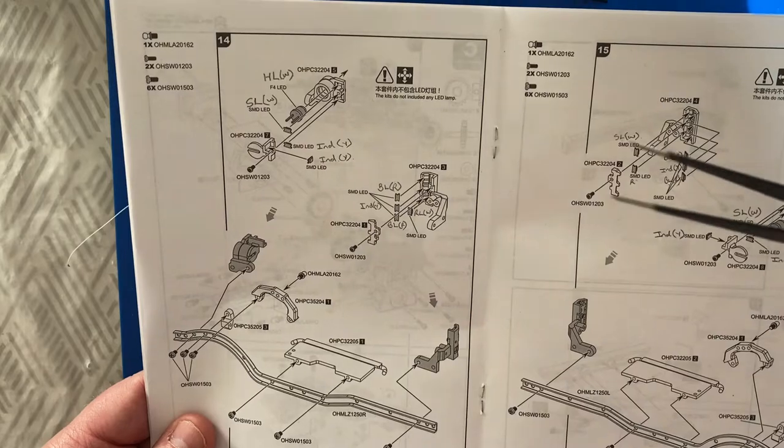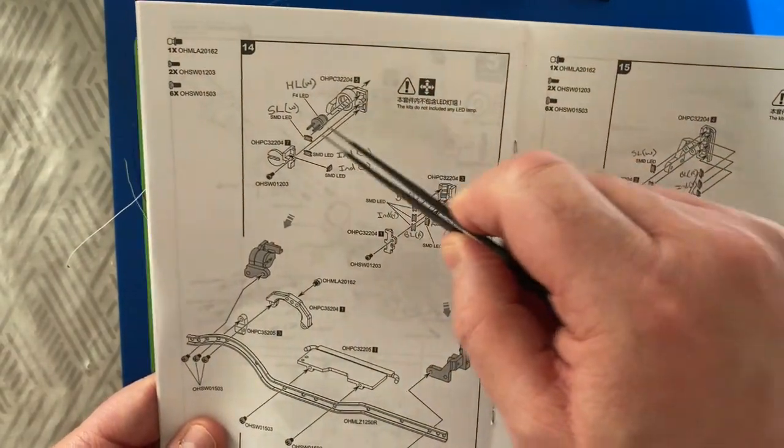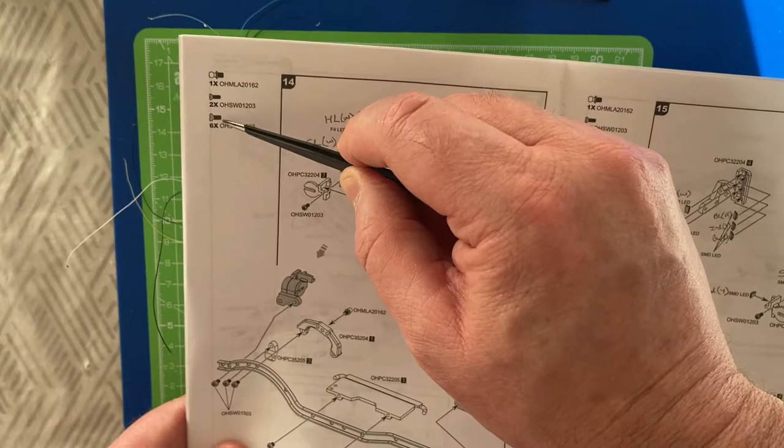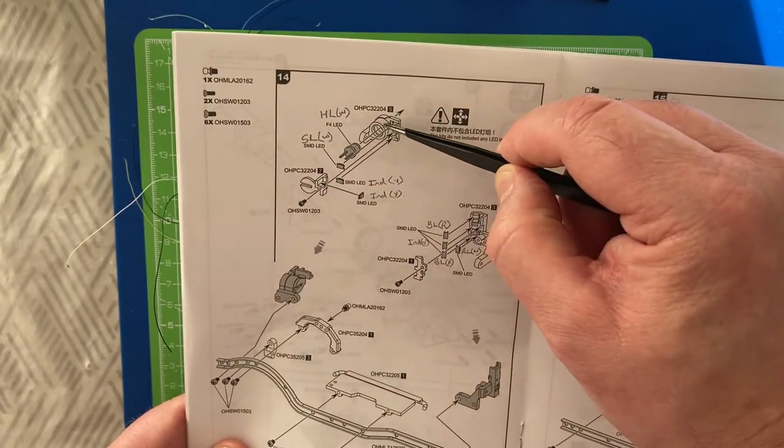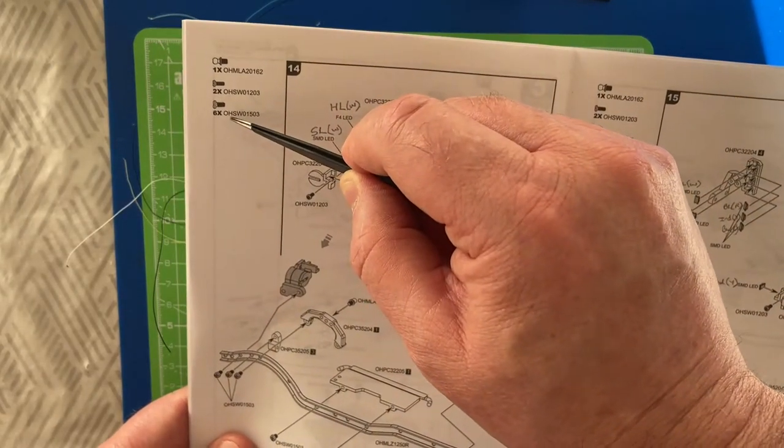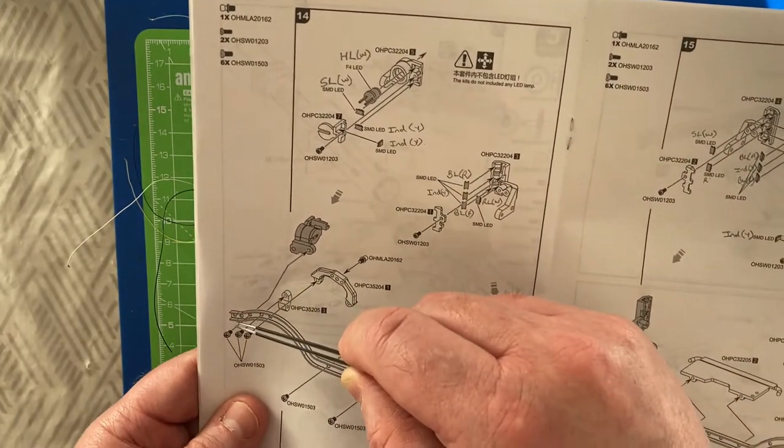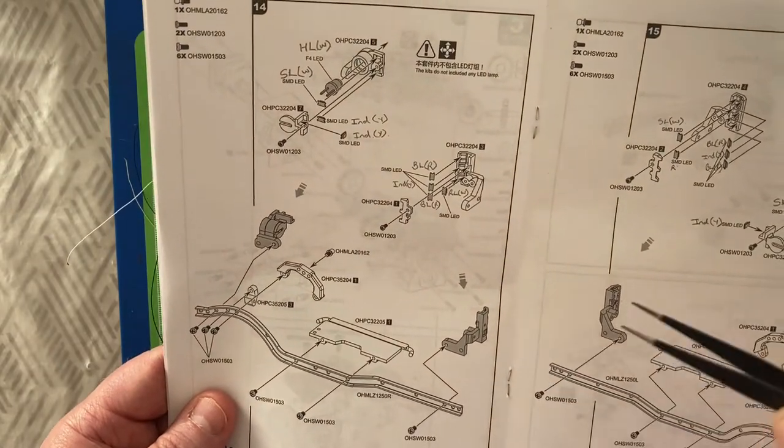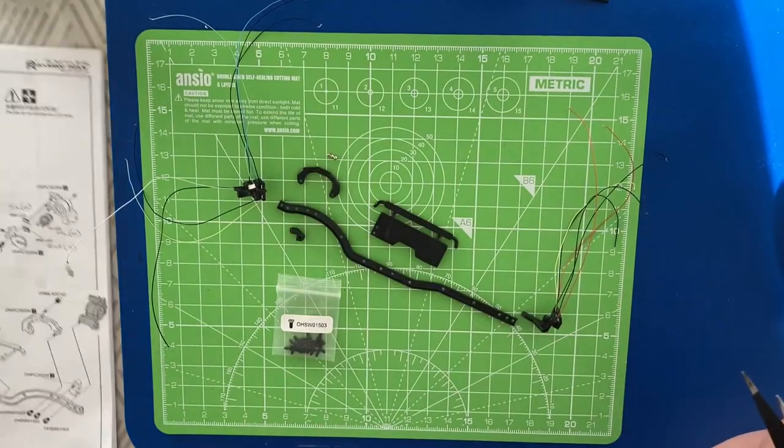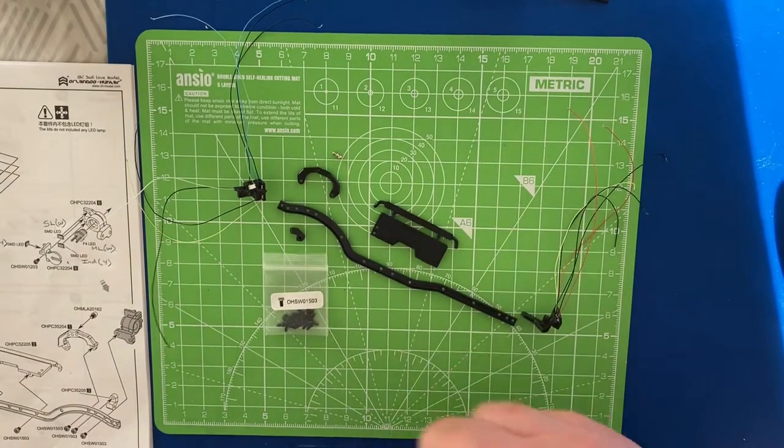So we now have the parts to do step 14. So I have one of these ball joints. These screws I've already used for the lights. And six of these OHSW01503s. These go in the chassis. So let's build it up.